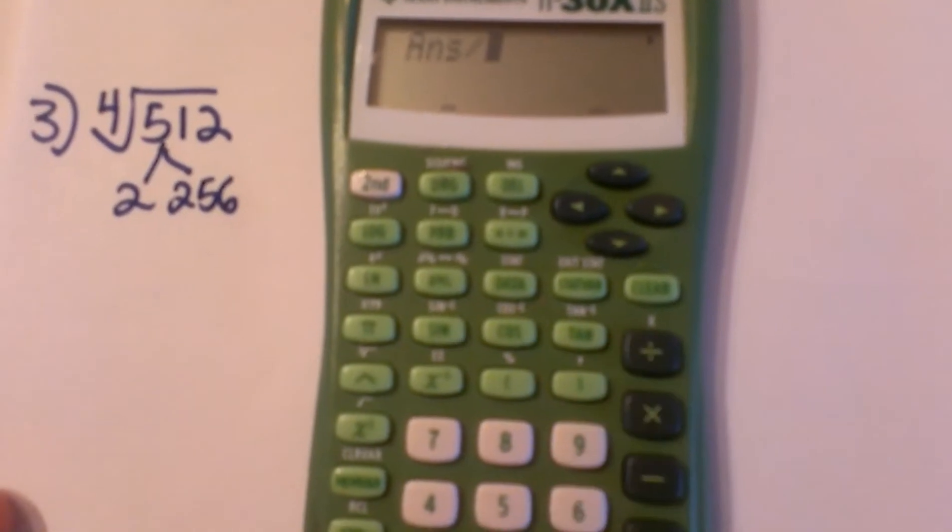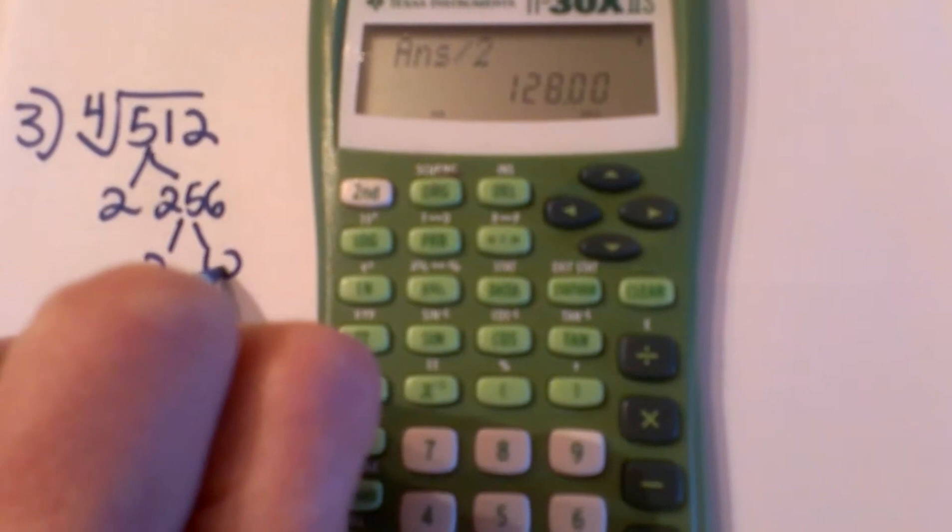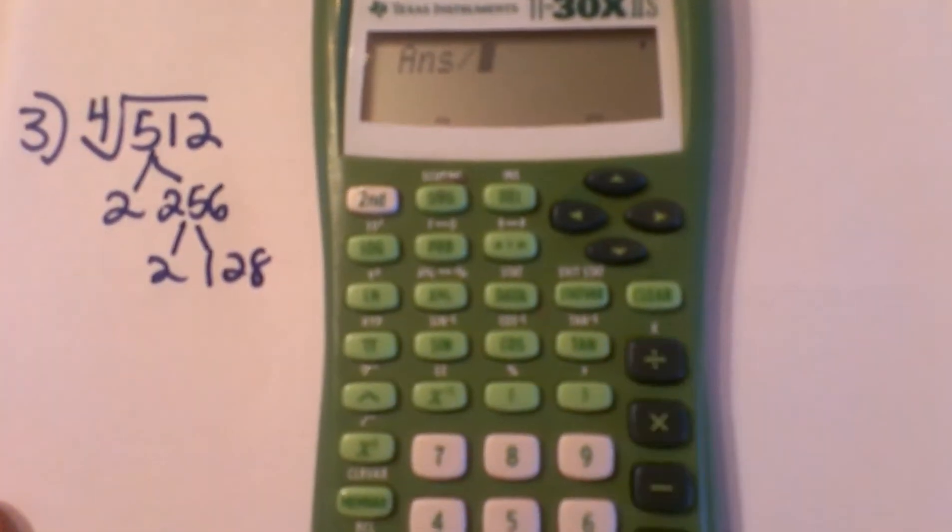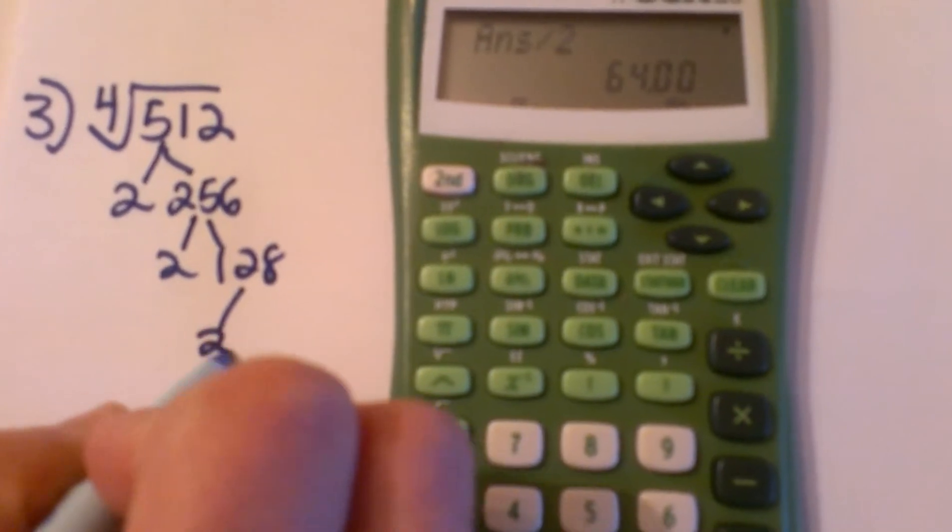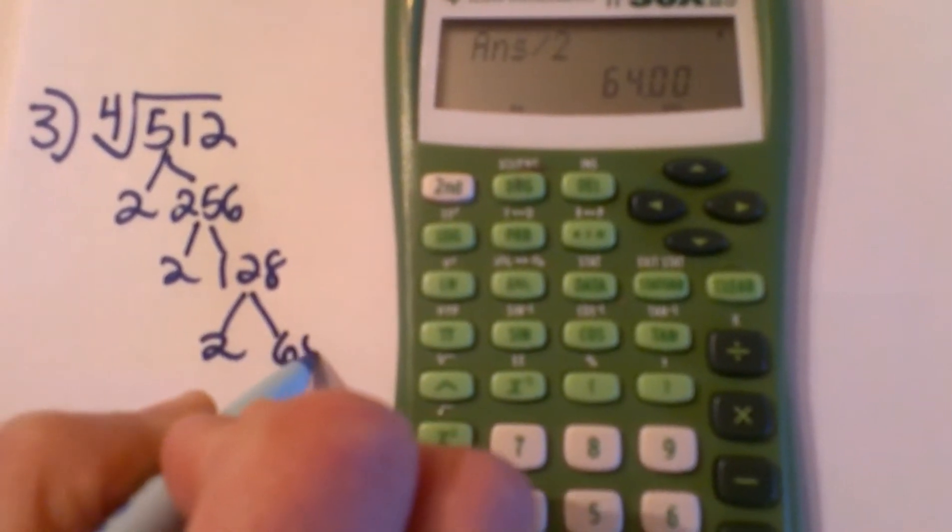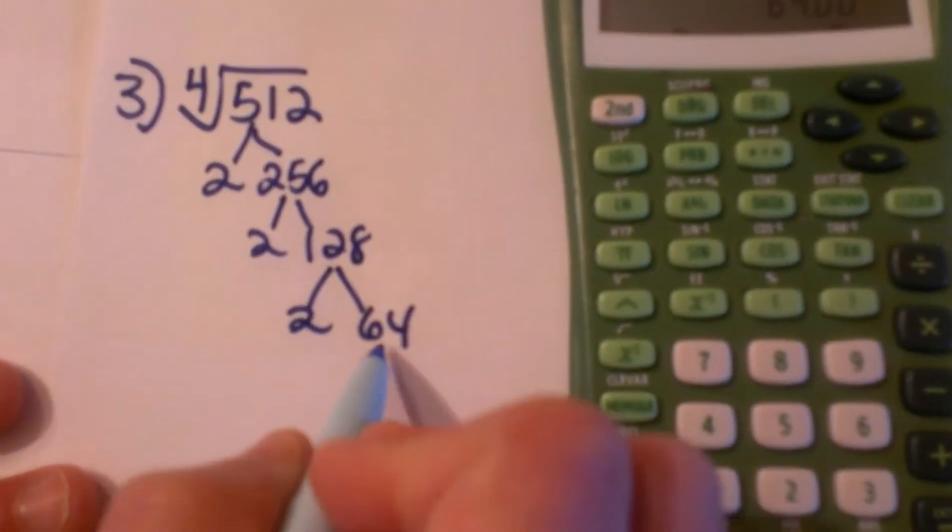Okay, 256 divided by 2 is 128. 128 is even, so let's keep going. Let's divide by 2 again and I get 64. Now 64 breaks down, and now we are getting into the smaller numbers so I don't need my calculator anymore.